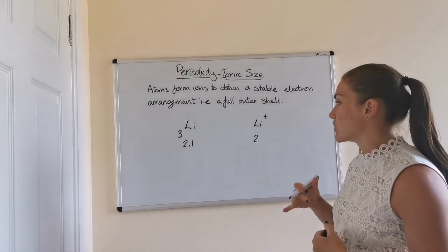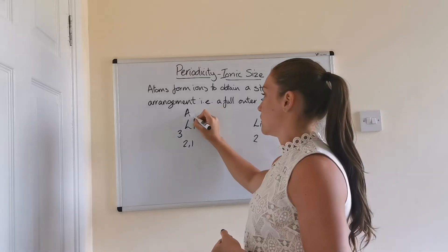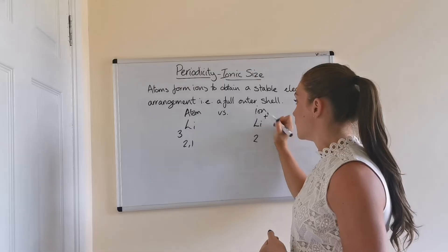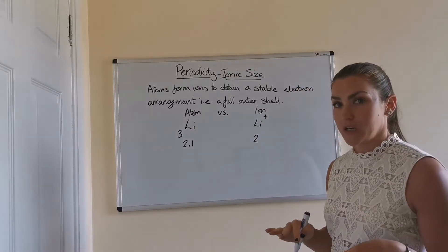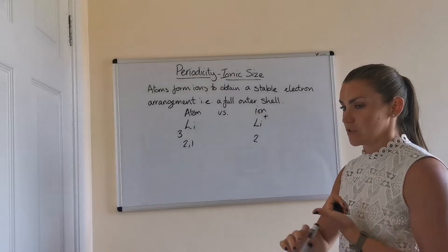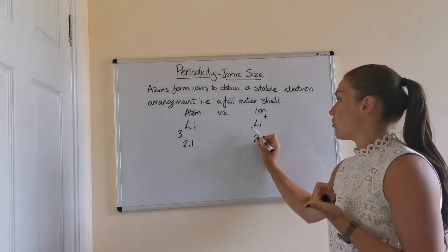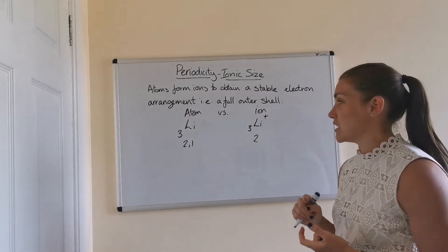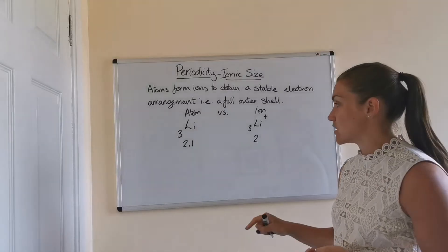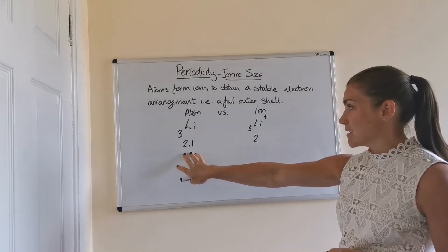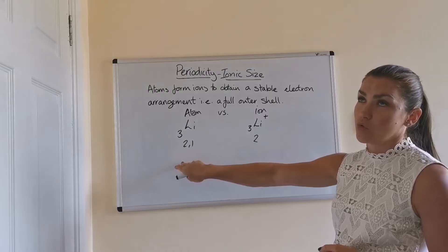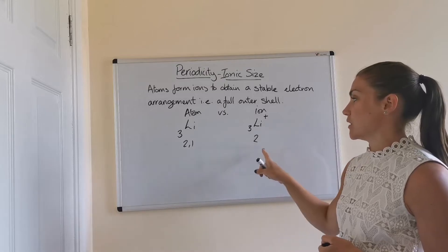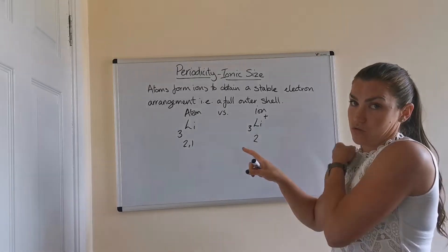If we compare the size of the lithium atom versus the lithium ion, based on what we talked about when looking at atomic size, the things that make the difference are the number of occupied energy levels or nuclear charge. They both have three protons, so they both have the exact same nuclear charge — so that's not going to make a difference. However, the lithium atom has one more occupied energy level than the lithium ion, because it's got the arrangement 2,1, whereas the lithium ion only has the arrangement 2.